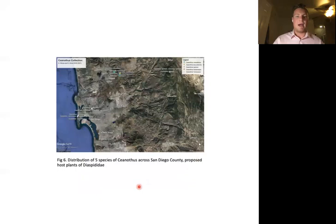Here on the map we can see the distribution of species across the county. Down here towards the coast we collected Ceanothus verrucosus. Up here towards Poway we collected C. crassifolius, tomentosus, and leucodermis. And then up here in the top right, more towards Julian, we collected C. palmeri.